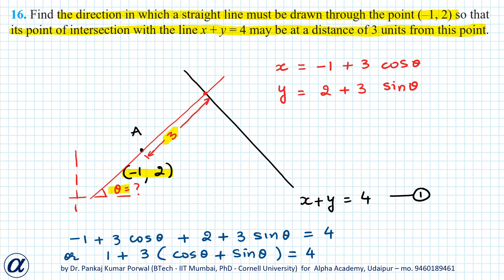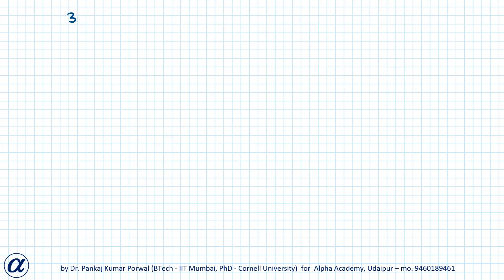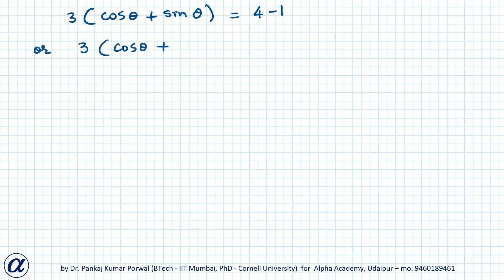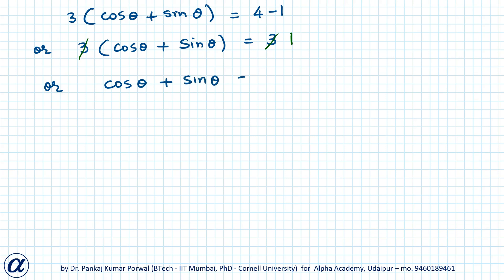Taking 1 to the right-hand side gives 3 cos theta plus sin theta equals 3. Cancelling the 3 on both sides, I am left with cos theta plus sin theta equals 1.